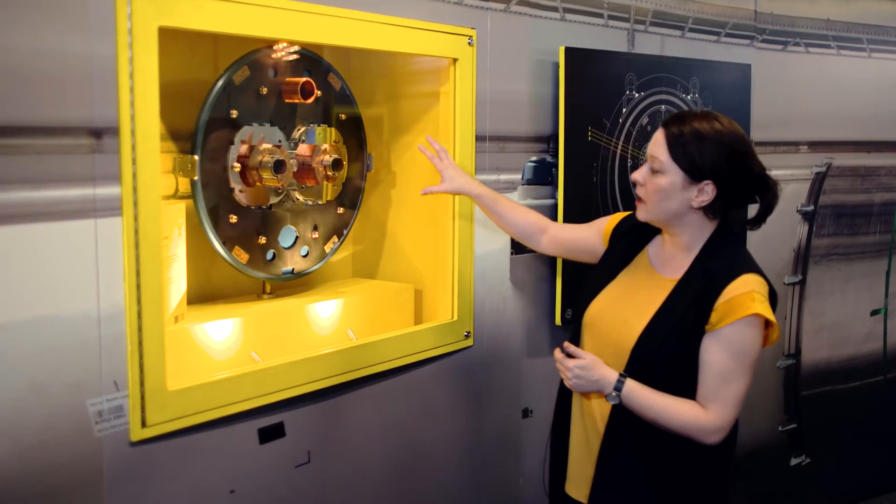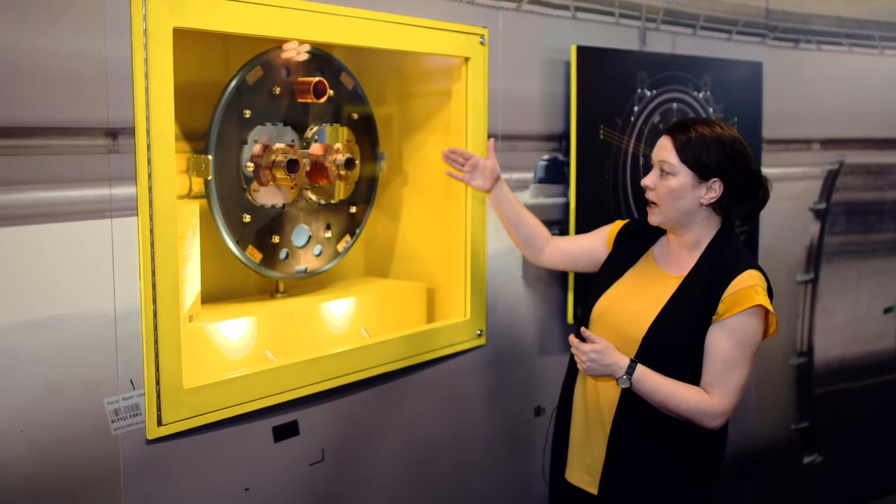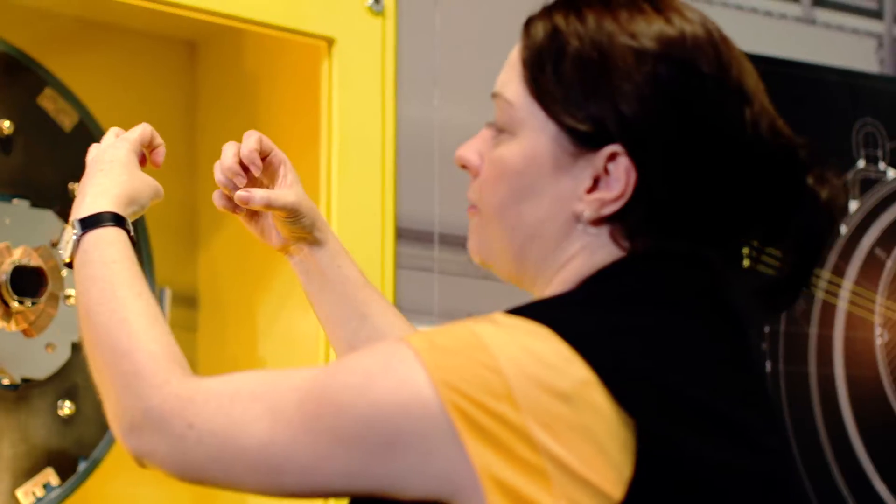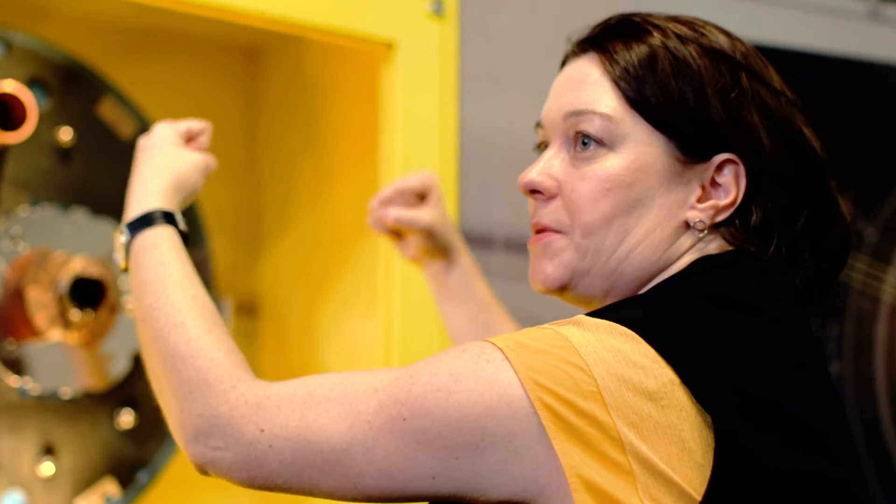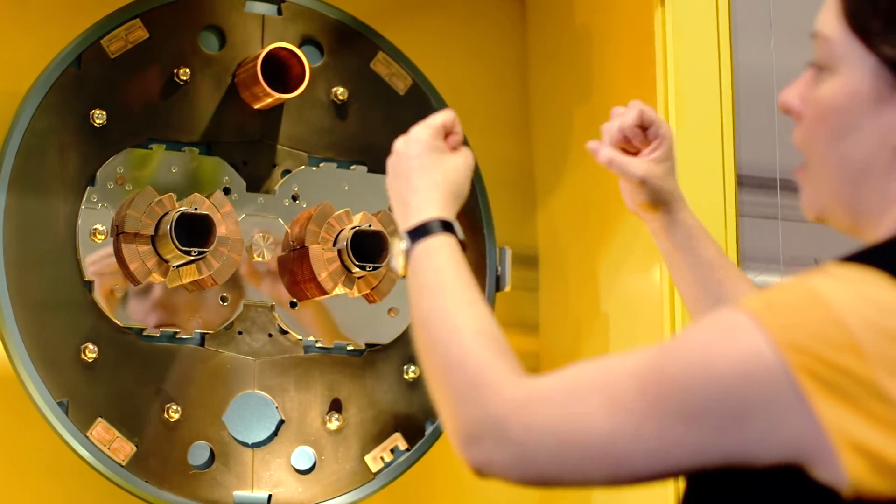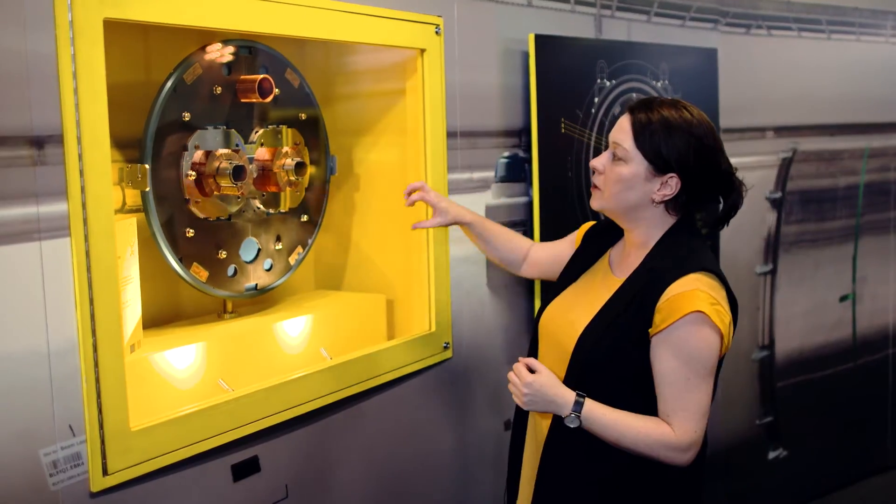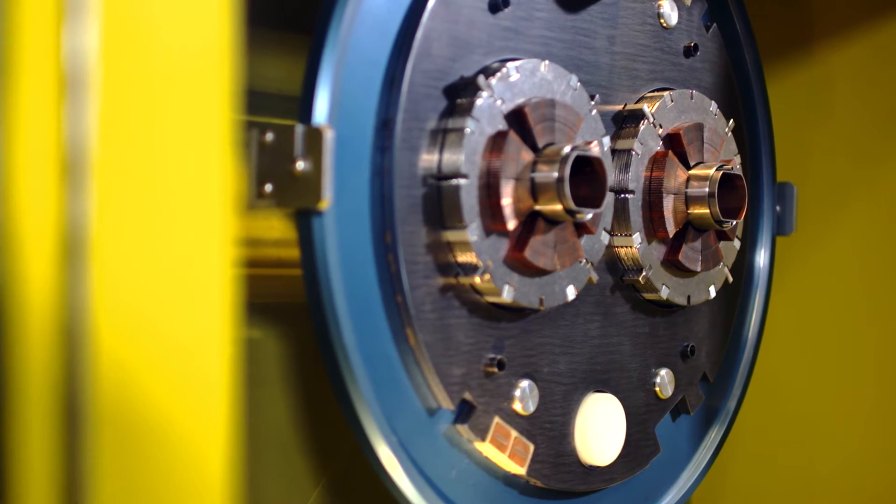So you can see on this slice through of what an LHC magnet looks like, the two beam pipes and the forces that would want to pull these beam pipes apart when the collider is running are very very strong. So you have a huge big iron yoke system around to try and keep it all together.